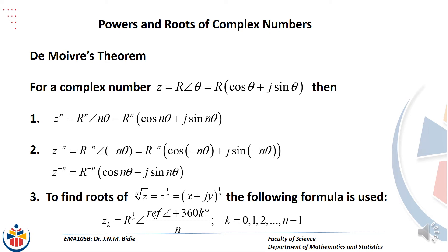We are going to look at powers and roots of complex numbers and we'll use what is known as De Moivre's theorem. Note that we take the complex number z with modulus r and argument theta. Then the nth power of z is equal to the nth power of r cis nθ. So n multiplies theta but r goes to the power of n.